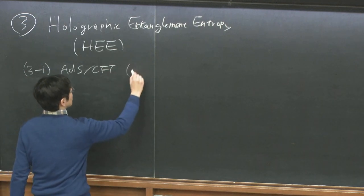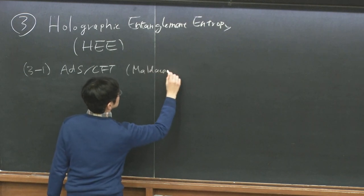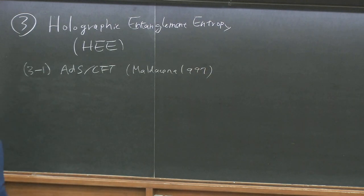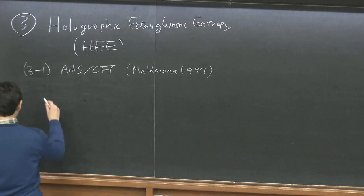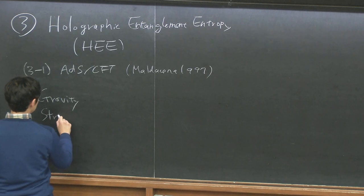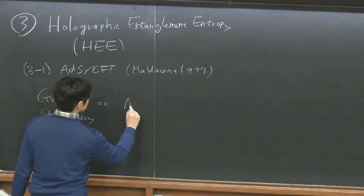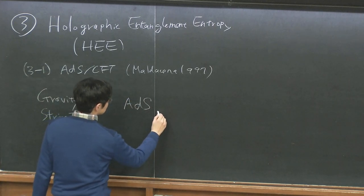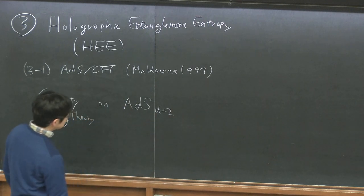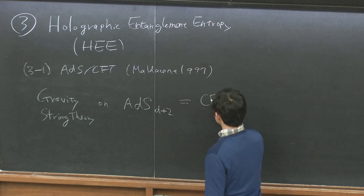ADS-CFT was discovered by Maldacena in 1997. The claim is that gravity — well, string theory, originally derived in string theory — on anti-de Sitter space, ADS_{D+2}, is dual to a D+1 dimensional conformal field theory. I use the convention D+2 for the bulk dimension.